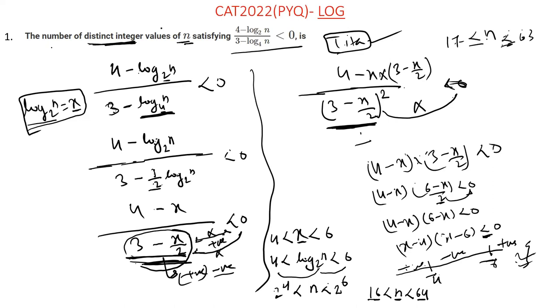But we have to find number of distinct integer values. Now we find out the number of distinct integer values. In case satisfied, 63 minus 16 plus 1, 47. 47 values satisfy. Plus one is because it is inclusive here. We add plus one, otherwise one doesn't get counted. If you manually check, 17 will come. I hope this is clear.